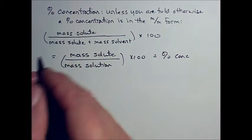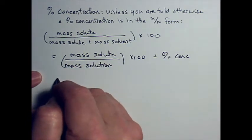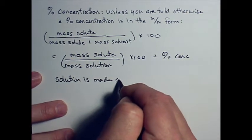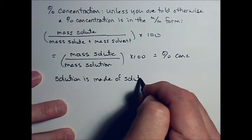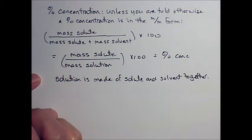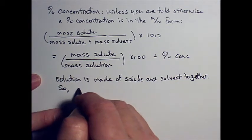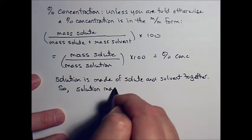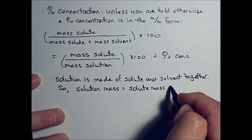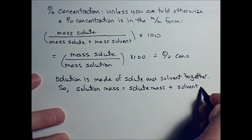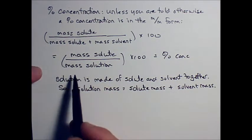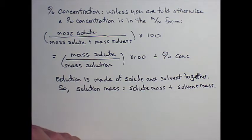So, it's important that you recall that the solution is made of solute and solvent together. Solution mass is equal to solute mass plus solvent mass, and that's why you can go from this to this, or if you need to, you start with this if you're given the mass of the solution.